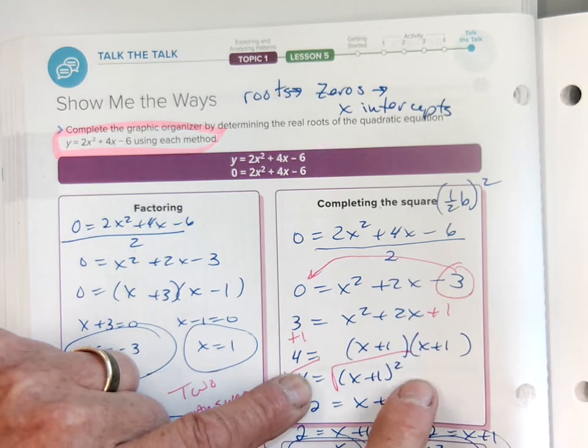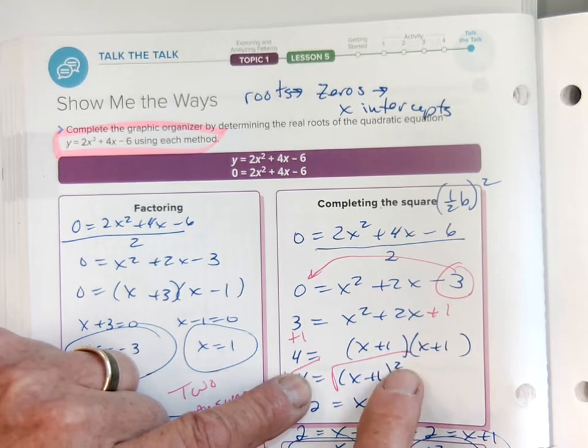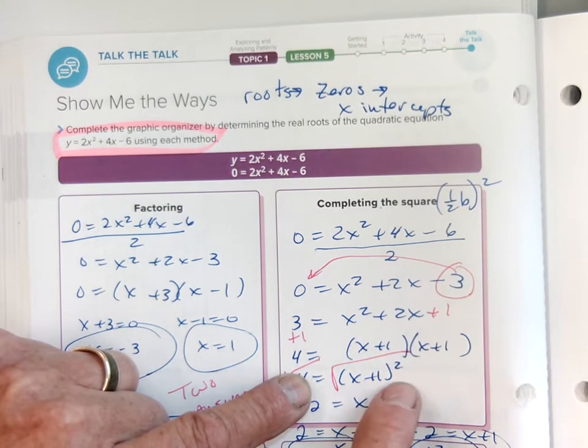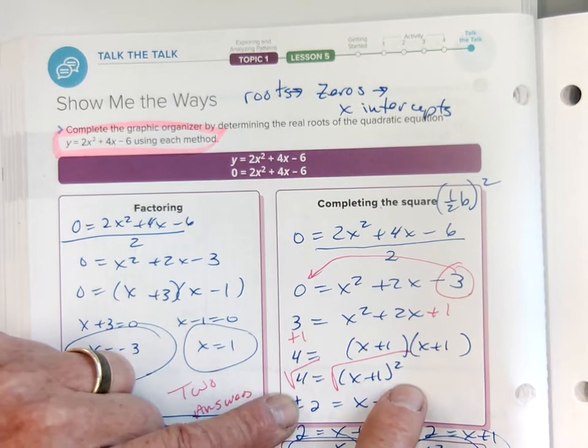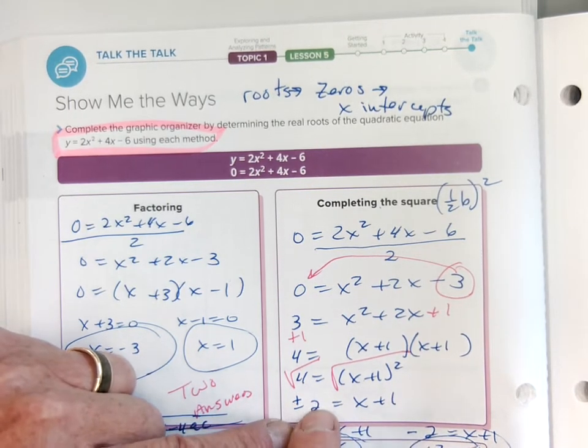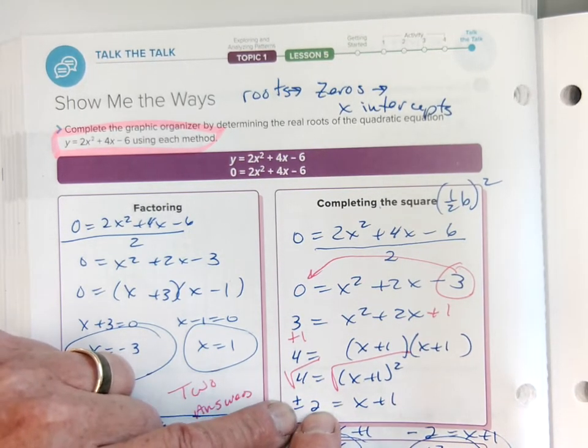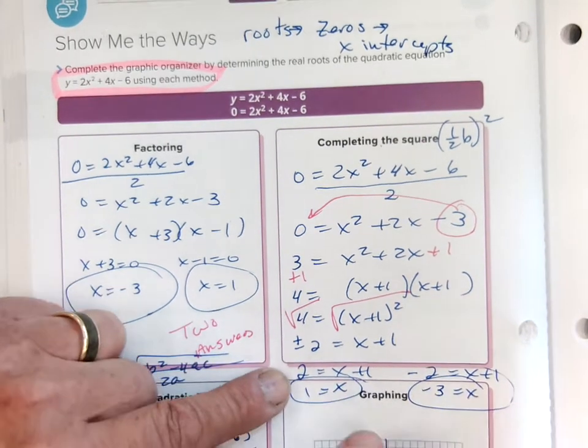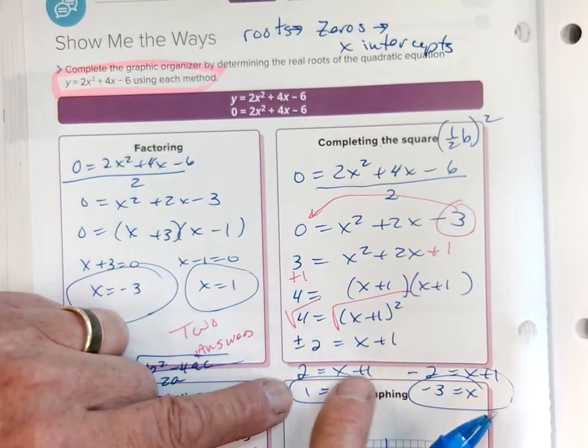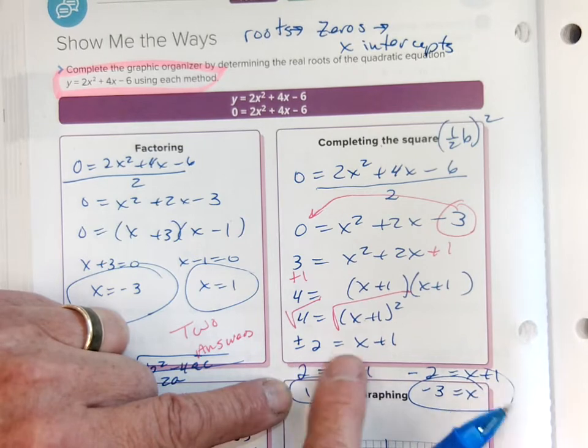To get rid of the square, I take the square root of both sides. I have to have two answers: square root of 4 is 2, but also -2. Then I set up mini equations: 2 = x + 1 and -2 = x + 1.